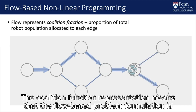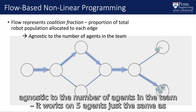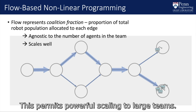The coalition function representation means that the flow-based problem formulation is agnostic to the number of agents in the team — it works on 5 agents just the same as on 500. This permits powerful scaling to large teams.